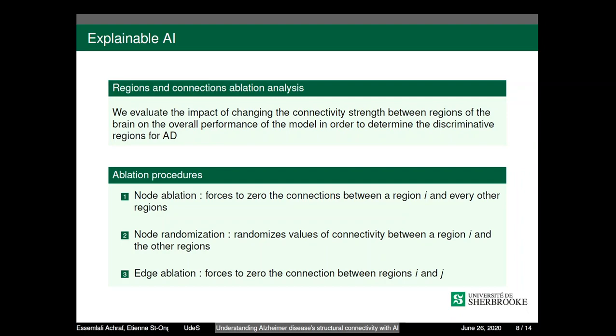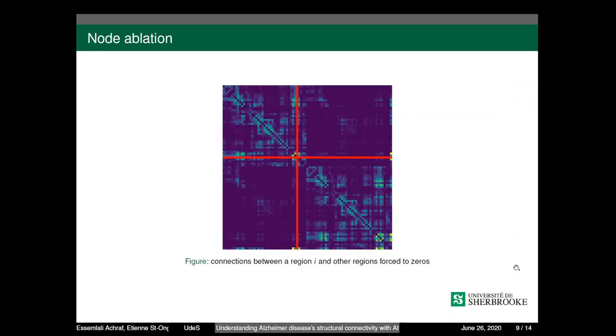We followed three procedures: node ablation, node randomization, and edge ablation. As we can see in the further slides, there is node ablation where we force to zero the connection between region Y and all the other regions. Meanwhile, node randomization, we change this and randomize the values between the connections of region Y and other regions, and edge ablation by forcing to zero connections between set and combination of specific number of regions.